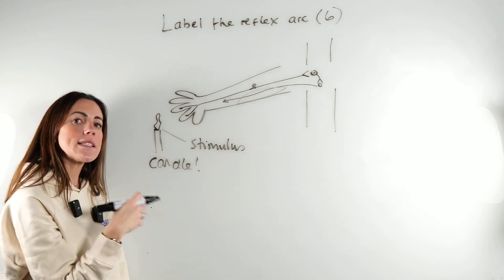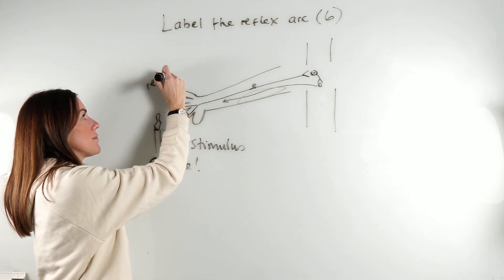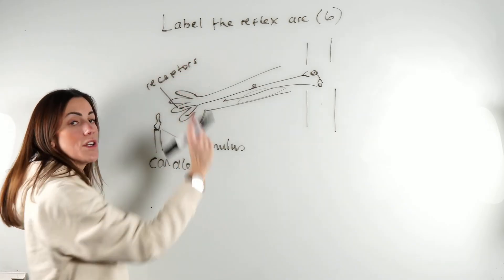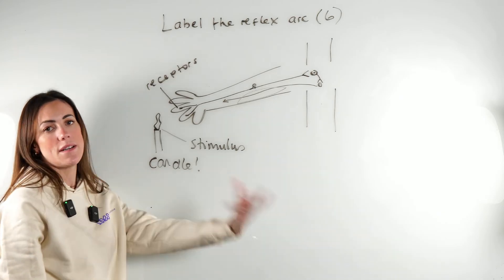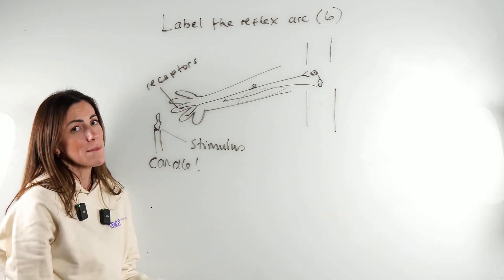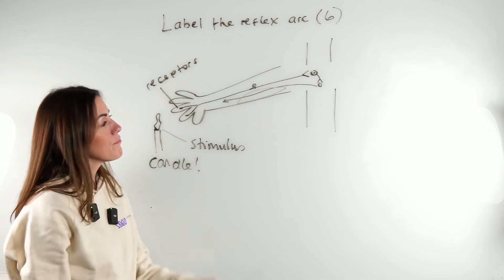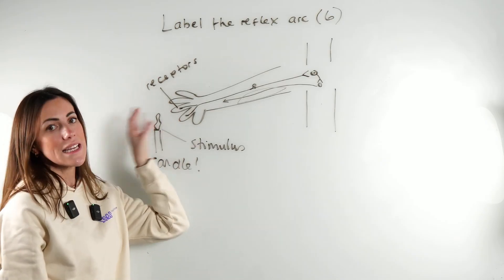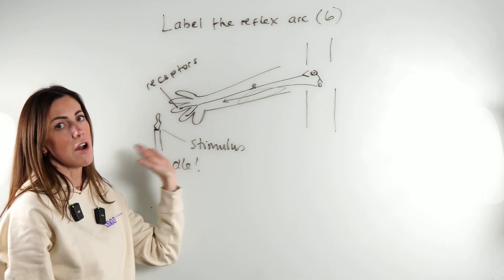Now the stimulus is always detected by a receptor. In this case, the receptors are going to be in the skin on the hand because this person has put their hand into the candle. They're called thermoreceptors—you don't need to know that at GCSE, you can just say receptors. The receptors in the skin on the hand will detect the heat from that candle.